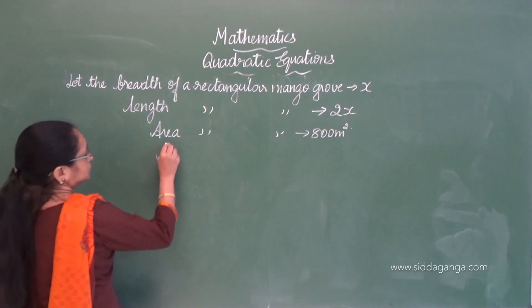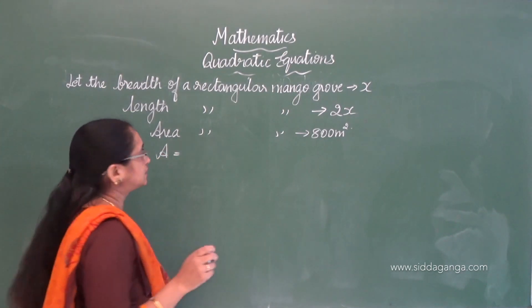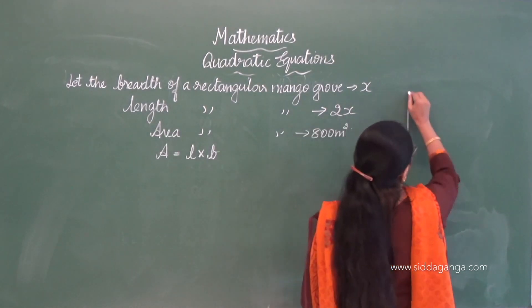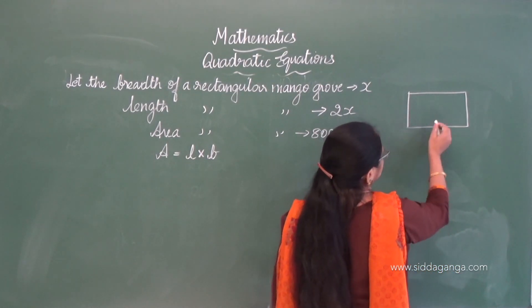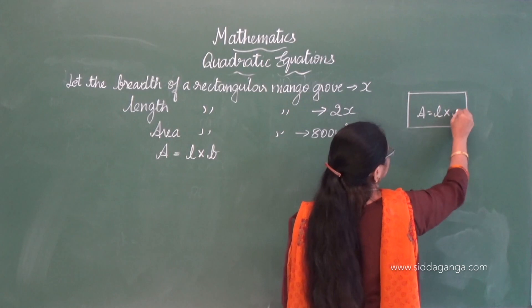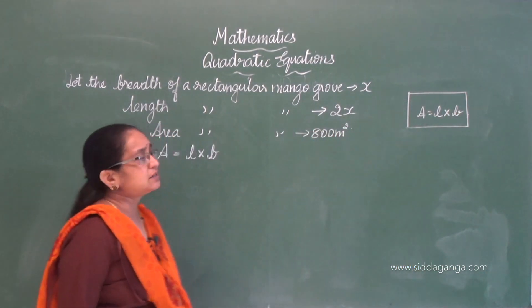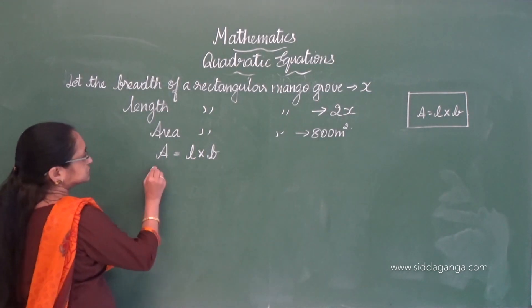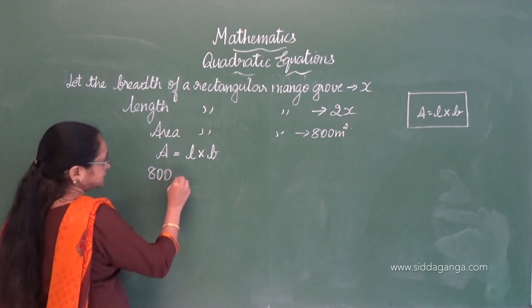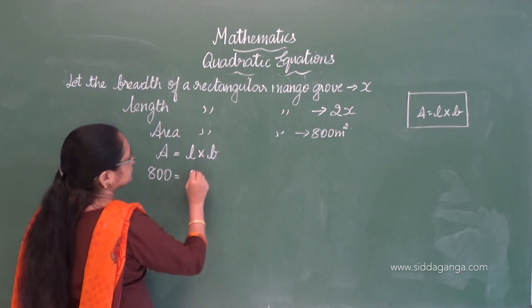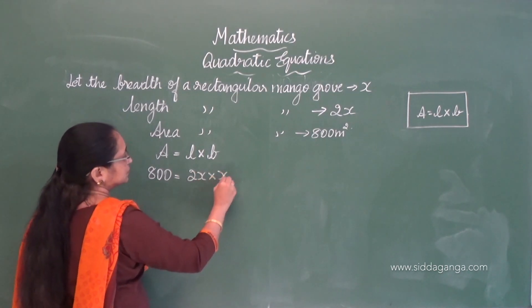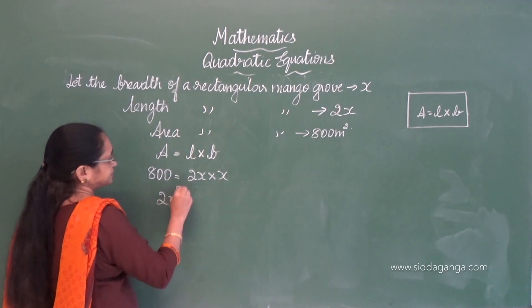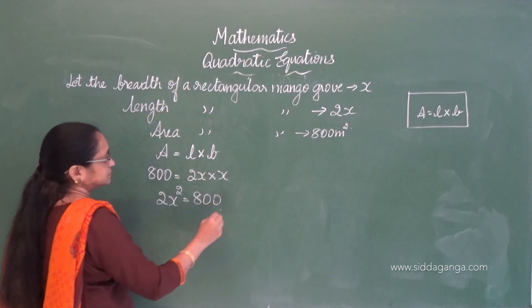The formula for area of a rectangle is A = L × B. So 800 = 2x × x, which gives 2x² = 800. Now x² = 400, so x = ±√400 = ±20. Since length cannot be negative, we take x = 20.